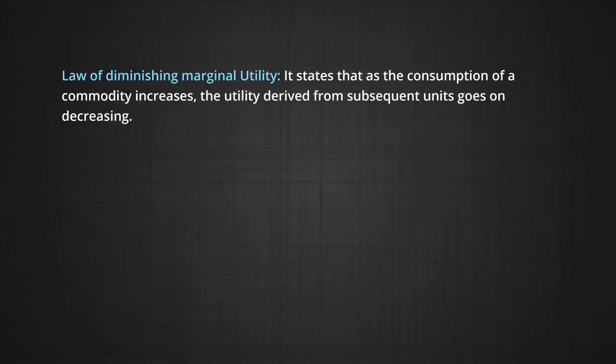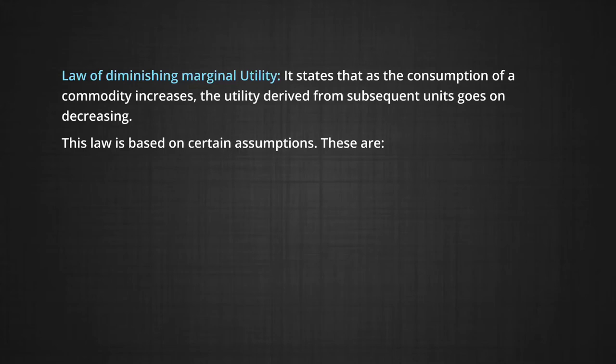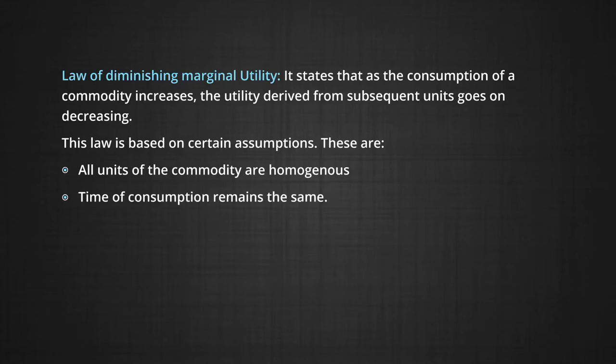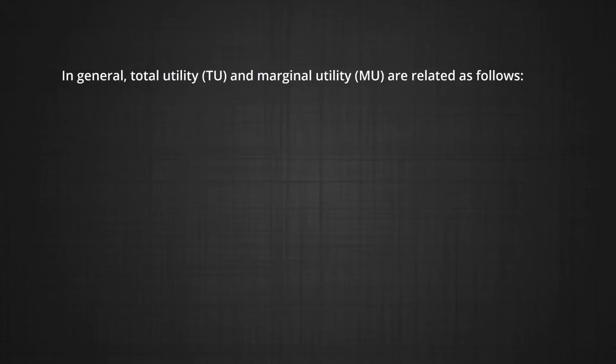In other words, marginal utility is the addition to total utility for each unit increase in consumption. The law of diminishing marginal utility states that as the consumption of a commodity increases, the utility derived from each subsequent unit goes on decreasing. This law is based on certain assumptions. These are: one, that all units of the commodity are homogeneous — that is, they are identical; and second, the time of consumption remains the same.